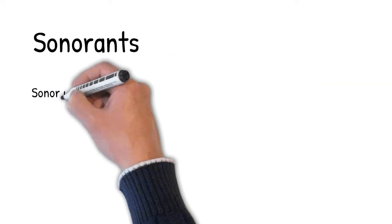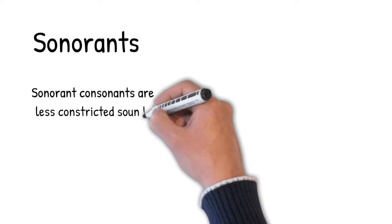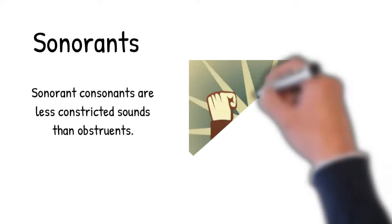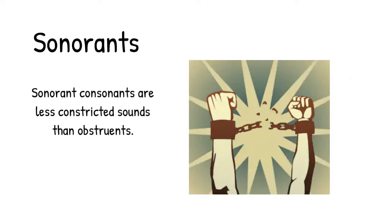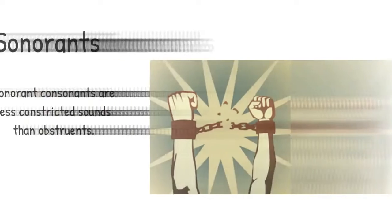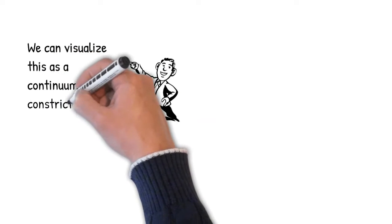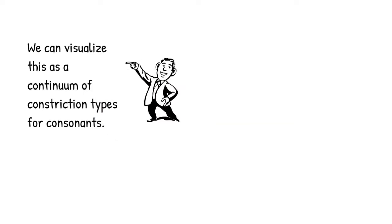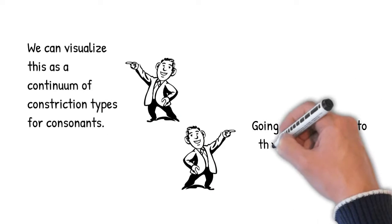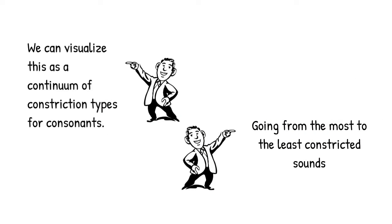Okay, let's turn our attention to the focus of today's video, the sonorant consonants. Sonorant consonants are made with less constriction than obstruents. A useful way to think about this is to visualize consonants as lying on a continuum running from the most constricted to the least constricted consonants.